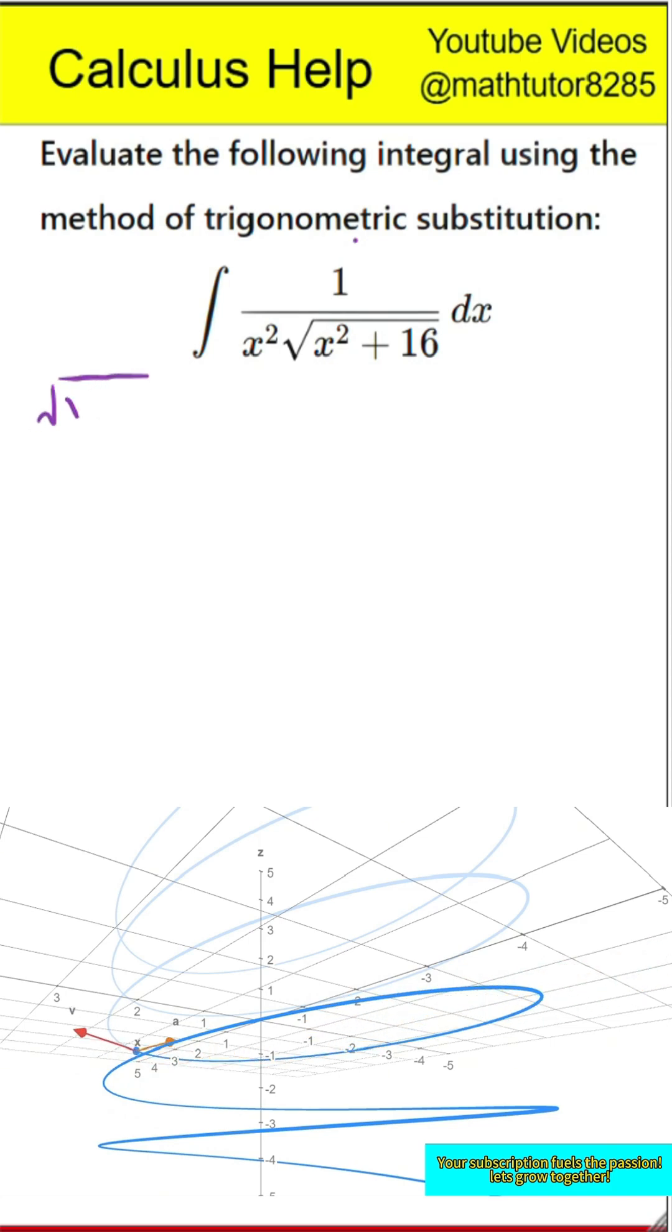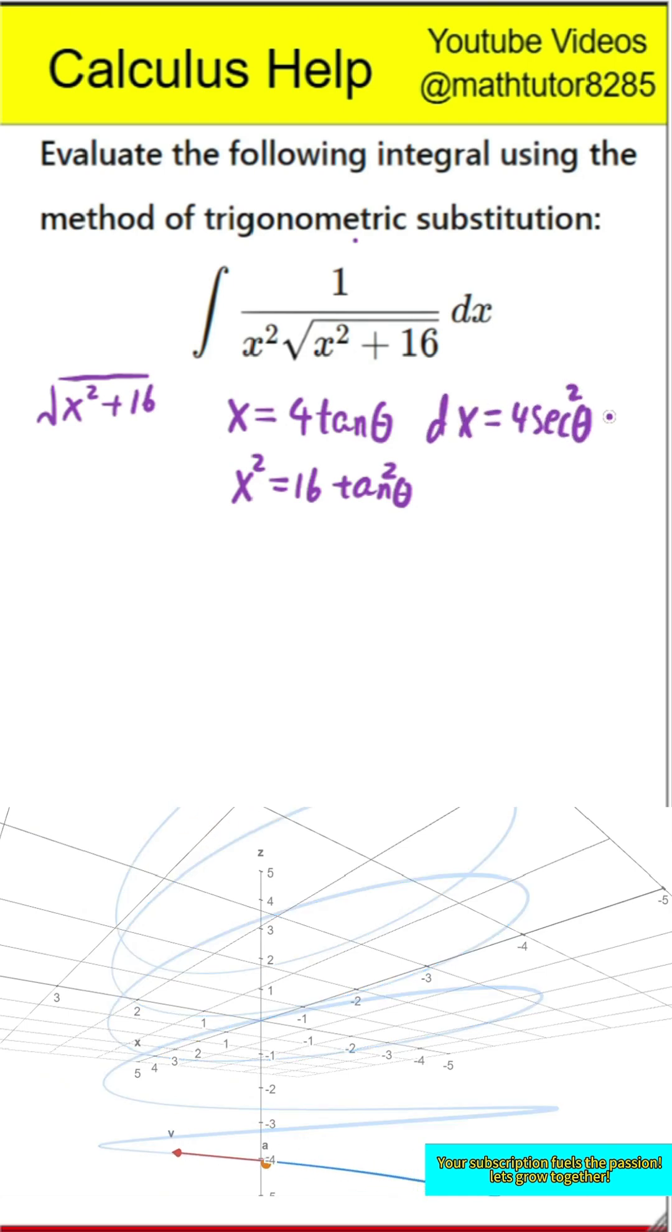First step is to choose a trigonometric substitution. Because we see a square root of the form x squared plus a constant, it is helpful to substitute x with 4 times tangent of theta. That means dx becomes 4 times secant squared theta d theta. This also means x squared becomes 16 times tangent squared theta. The square root of x squared plus 16 becomes 4 times secant theta.